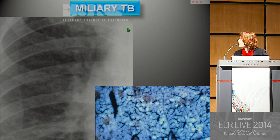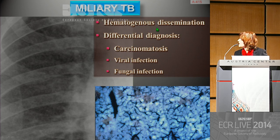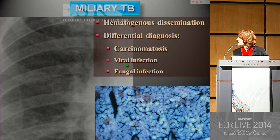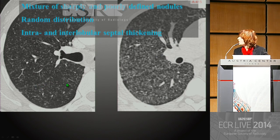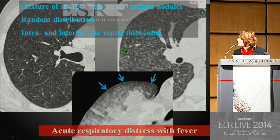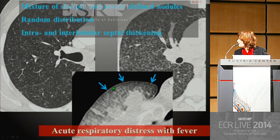A few words about miliary disease. Miliary disease corresponds to hematogenous dissemination of viable bacilli. The differential diagnosis mainly includes metastasis and, in immunosuppressed patients, viral or fungal infection. The CT appearance is a mixture of sharply and poorly defined micronodules with a typical random distribution. Note the micronodules along the fissure, which are never seen in bronchogenic distribution, and micronodules along the pleura, typically encountered in miliary disease.